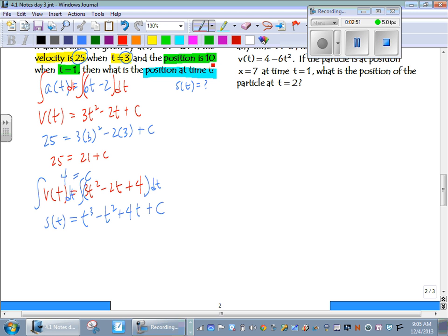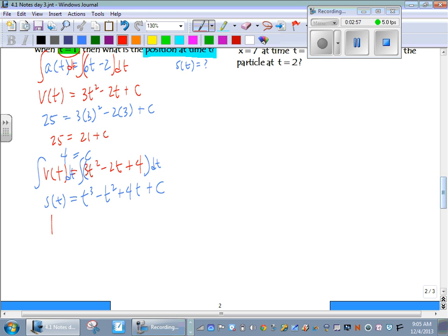And now we can use the information we're given about the position. The position is 10 when t is 1. So we're putting 10 in for position, s of t, and 1 in for t.